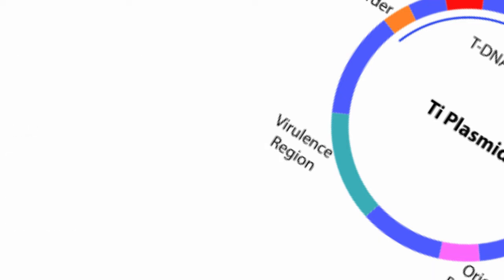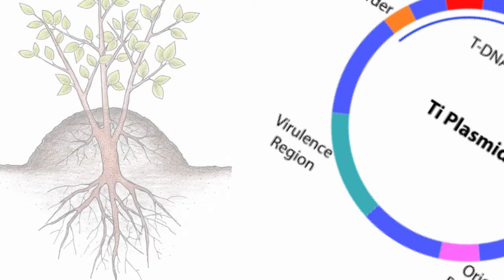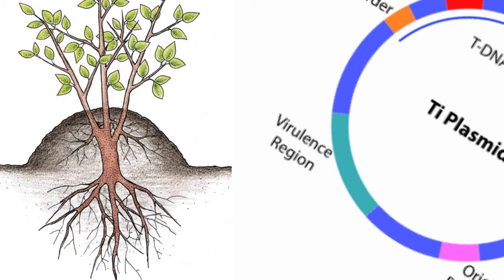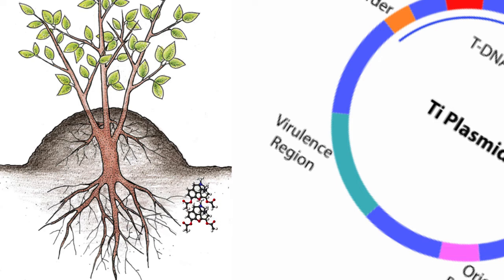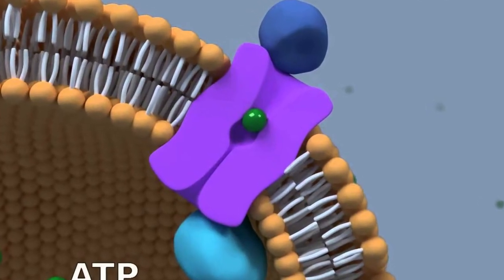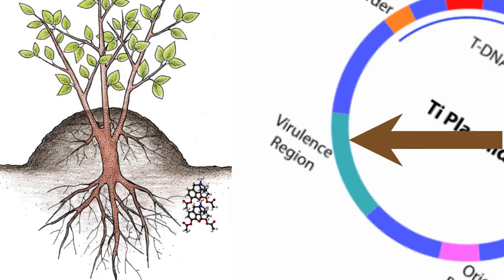Whenever wounds are caused in the rhizosphere area of a plant, they secrete acetosyringone. Acetosyringone is a phenolic compound released by plant cells. Acetosyringone binds to the VirA protein and activates the vir region. When VirA is phosphorylated, it activates VirG, which is a transcriptional activator of the vir box. The vir box contains vir B, C, D, E, and F.